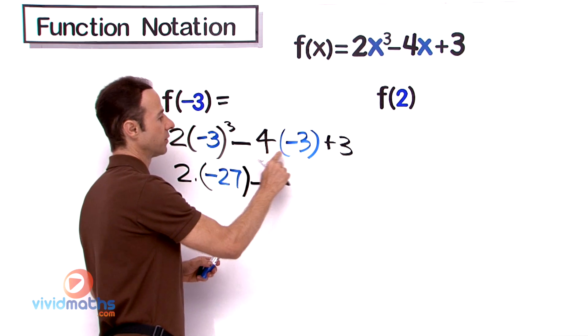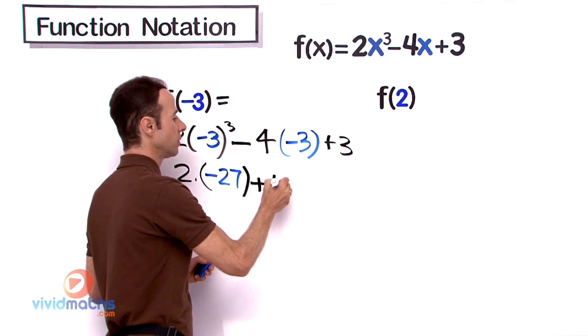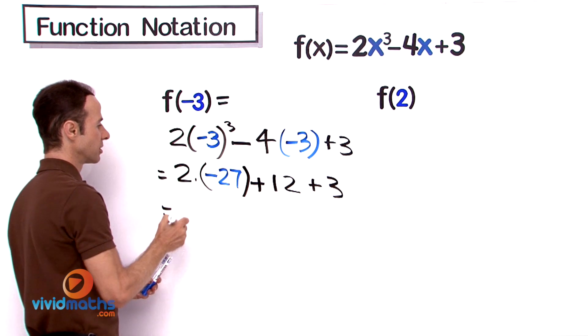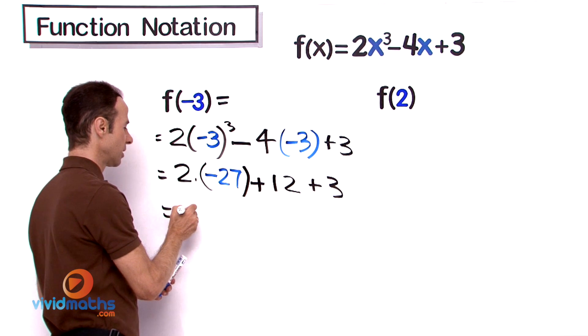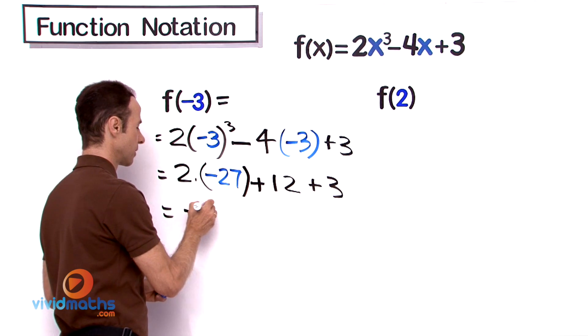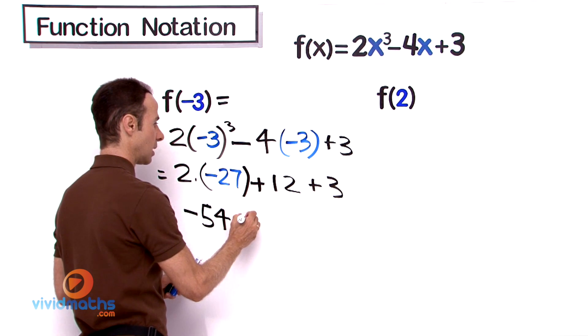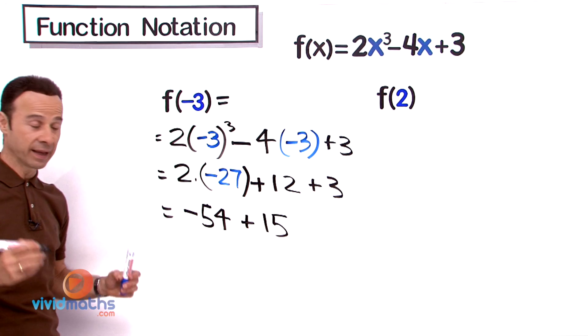Plus 3. Processing that again, we are going to get 2 times negative 27 is negative 54 plus 15, so function f(-3) equals negative 39.